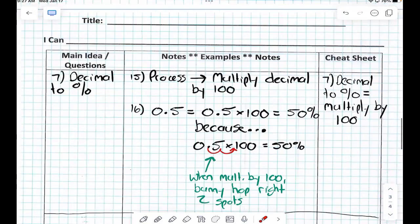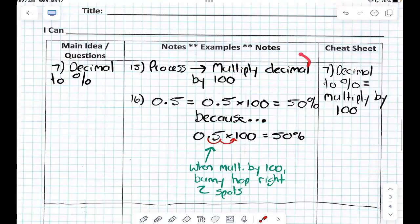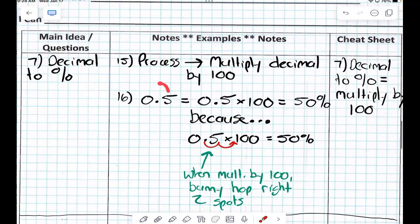OK, how about the last one? Decimal to percent. Process on the count of three. One, two, three. So if I have a decimal of 0.5, and I have to multiply it by 100, that's the same as doing what?